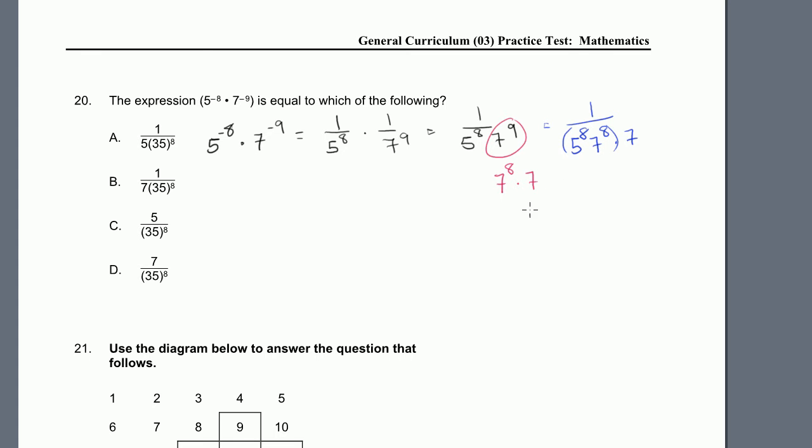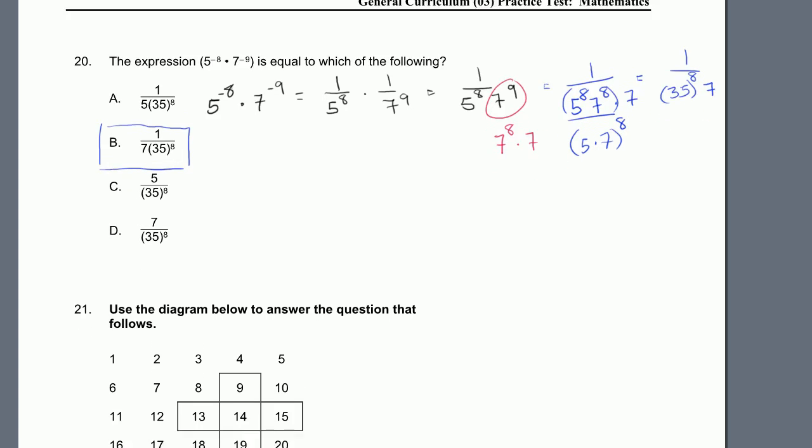But now if I group this, just put parentheses around it, I can do that because multiplication is associative. This is the same thing as 5 times 7 to the 8th power. A to the x times b to the x is the same thing as ab to the x. So this is equal to 1 over 5 times 7 to the 8th power is 35 to the 8th power times 7. And then that is choice B right there. They just switched the order of the 7 and the 35 to the 8th power.